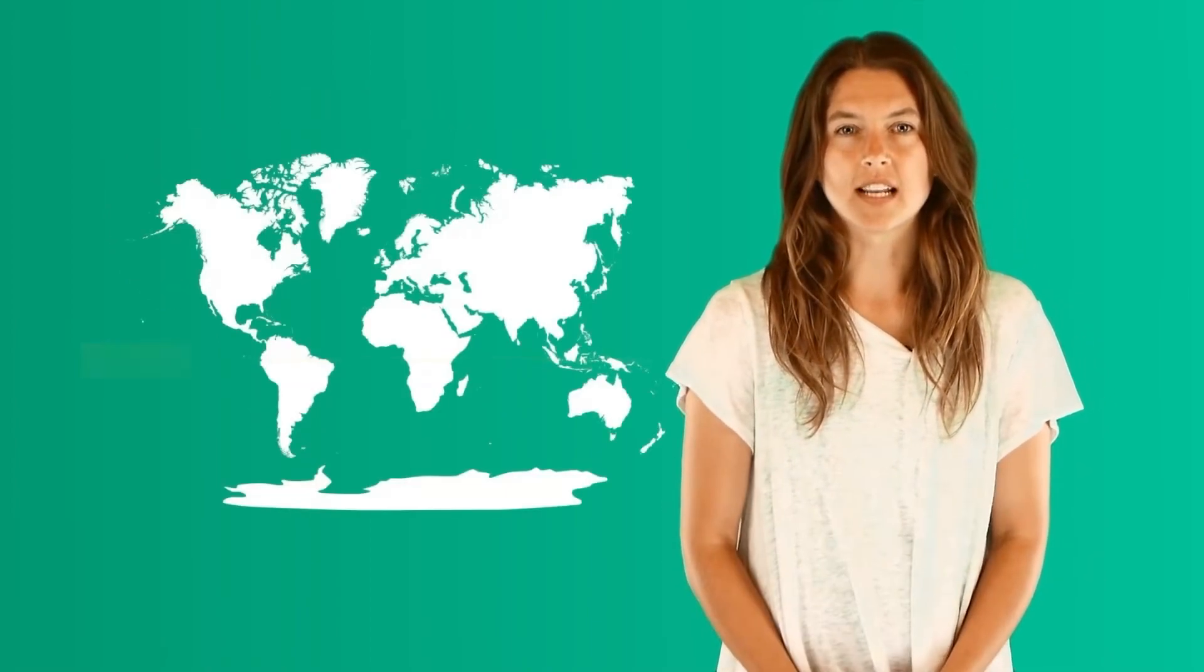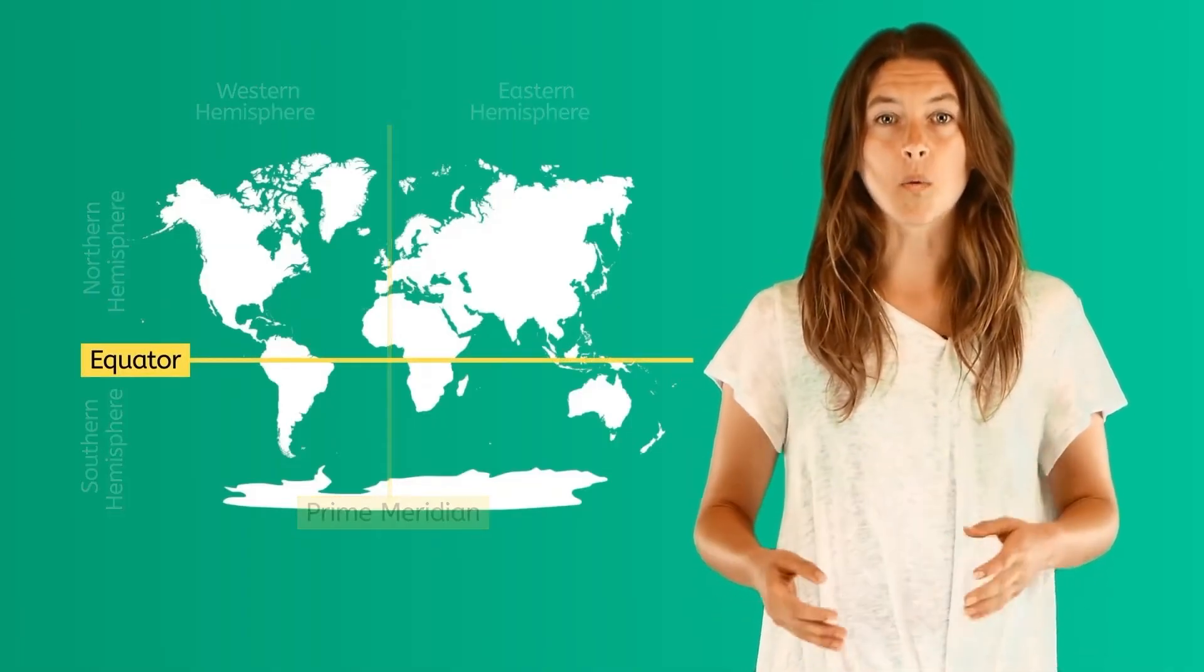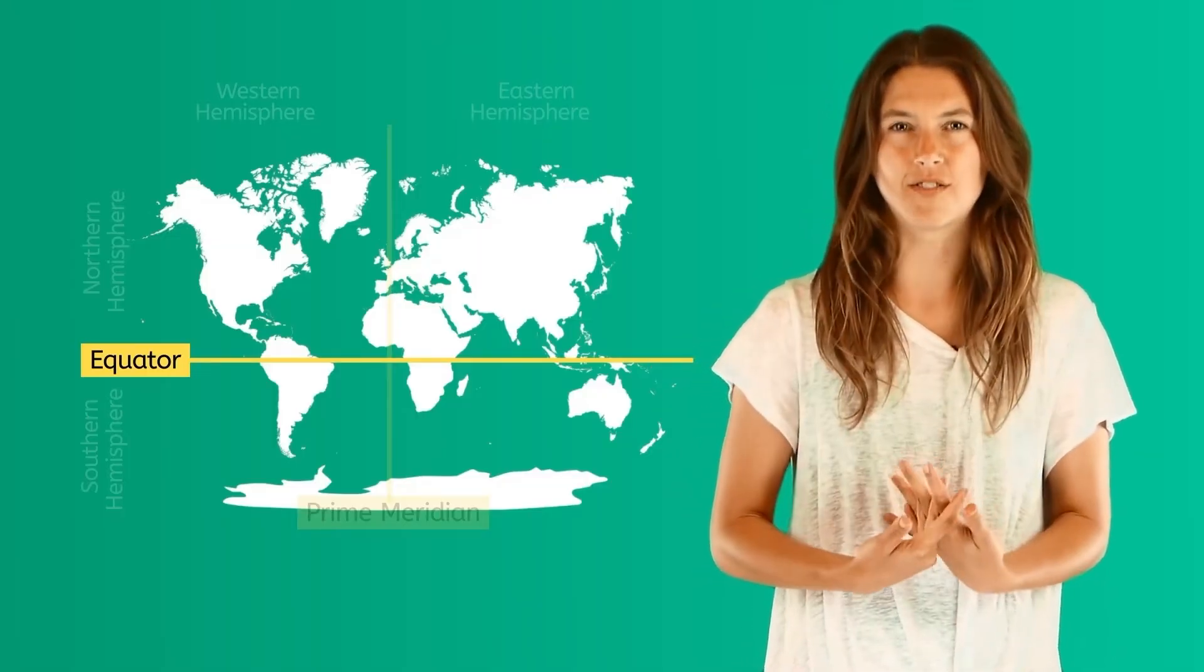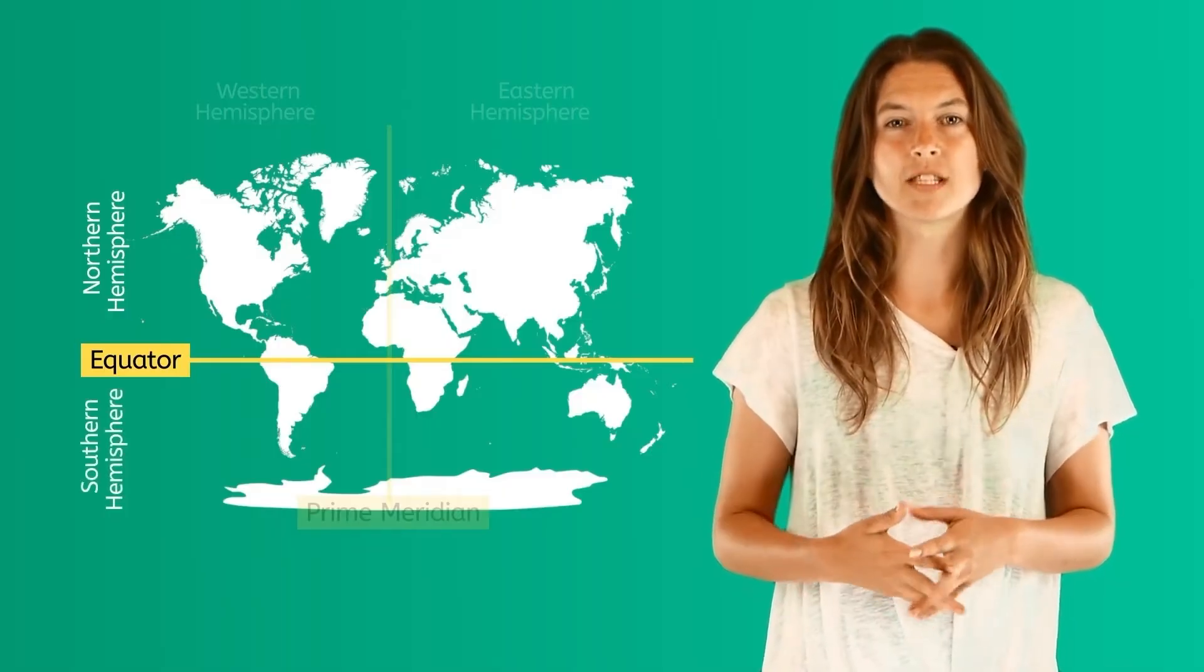Our world is further divided into four main sections called hemispheres. The equator is an imaginary horizontal line around the center of the Earth. It divides the Earth into the Northern and the Southern Hemispheres.